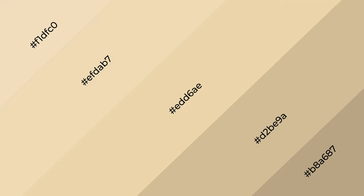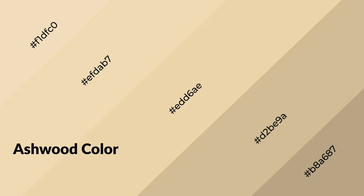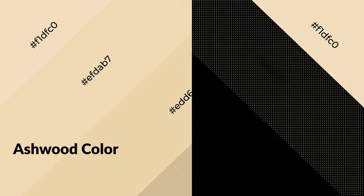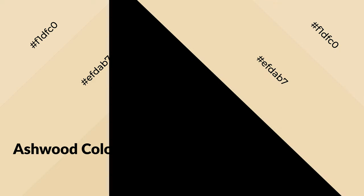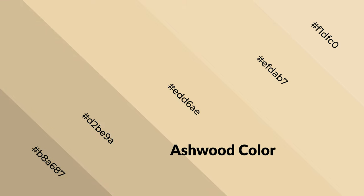Ashwood is a warm color and it emits cozier and active emotions. Warm colors are symbols of warmth, fire, heat, and sunshine. It also evokes joy, passion, love, and even anger. You can see warm colors used in restaurants and gyms.